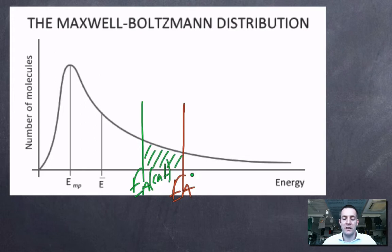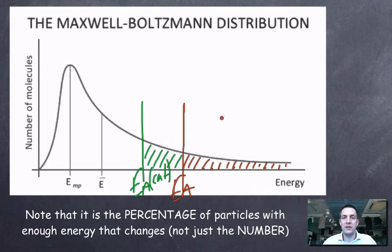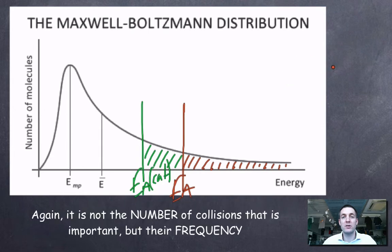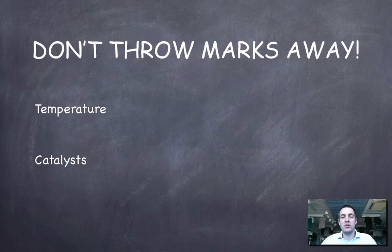I can shade the areas under the curve. The area to the right of the red EA (without catalyst) is clearly smaller than the area to the right of the green EA_cat (with catalyst). So by adding a catalyst, I've increased the percentage of particles with enough energy to react, and therefore a greater proportion of collisions will lead to a reaction — there will be more successful collisions per second.